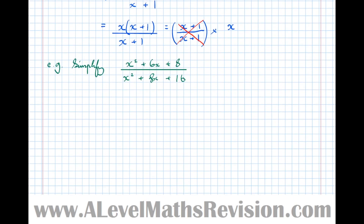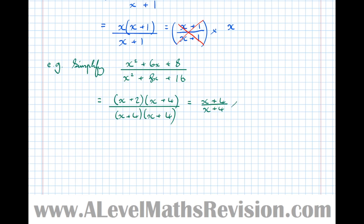First of all let's factorise it. By this point you know how to factorise quadratics. The top becomes (x plus 2)(x plus 4), all divided by, and on the bottom we've got (x plus 4) squared. Now if we reorder this fraction so that at the front we've got something over itself: (x plus 4) over (x plus 4) times, and left over we've got (x plus 2) over (x plus 4).